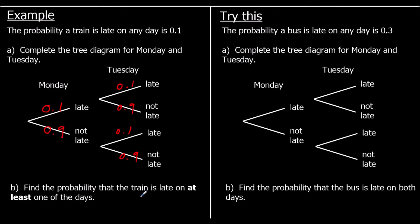Find the probability that the train is late on at least one of the days. There are two ways of doing this: we could find the probability of it being not late on both days and then do one minus the answer, or find the probability of late-late, late-not late, and not late-late, and add them together. It doesn't matter which one we do.